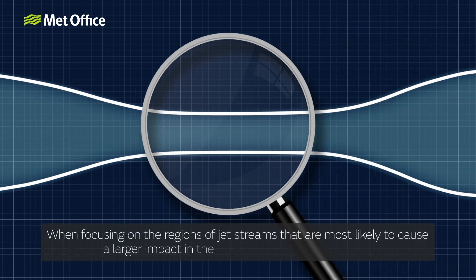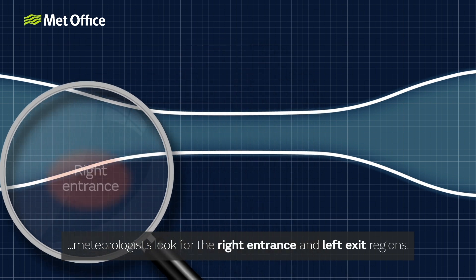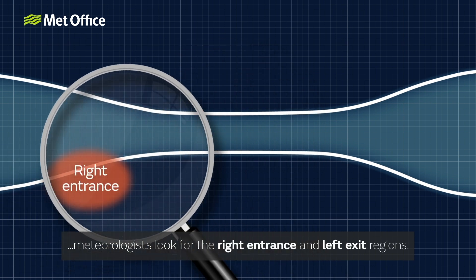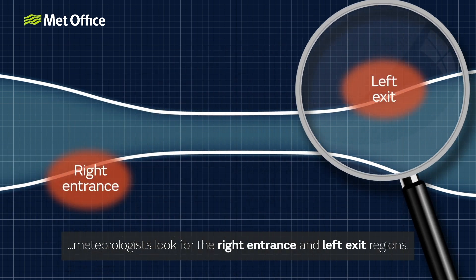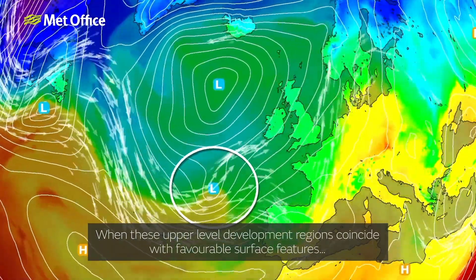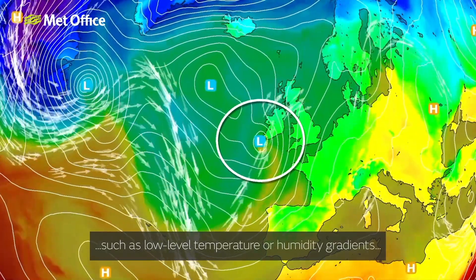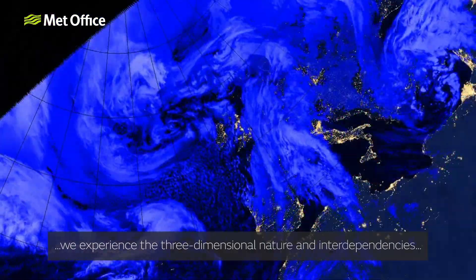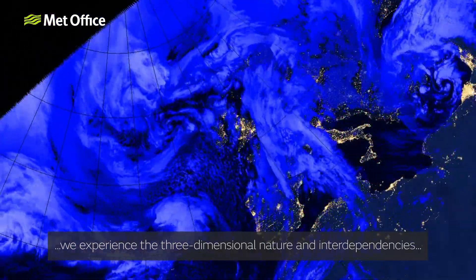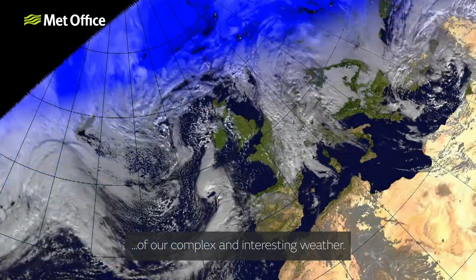When focusing on the regions of jet streams that are most likely to cause a larger impact in the weather that we experience, meteorologists look for the right entrance and left exit regions. When these upper-level development regions coincide with favourable surface features, such as low-level temperature or humidity gradients, we experience the three-dimensional nature and interdependencies of our complex and interesting weather.